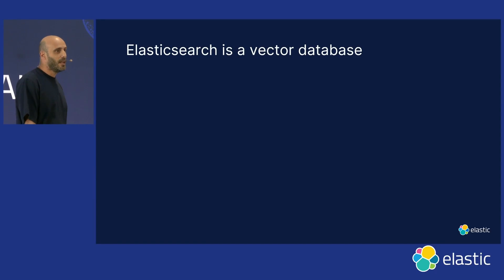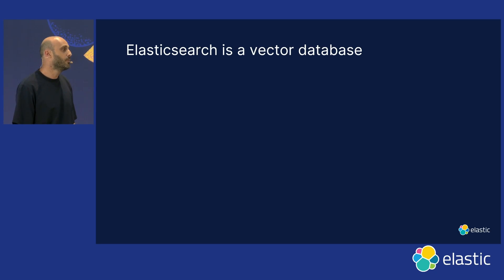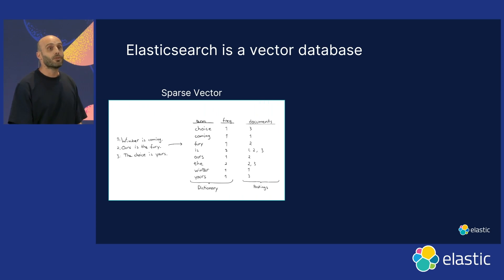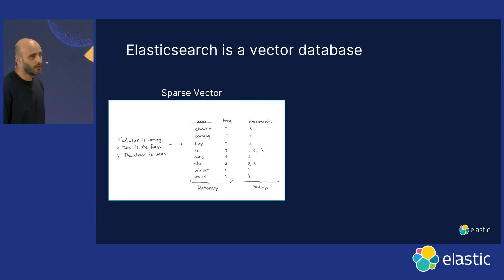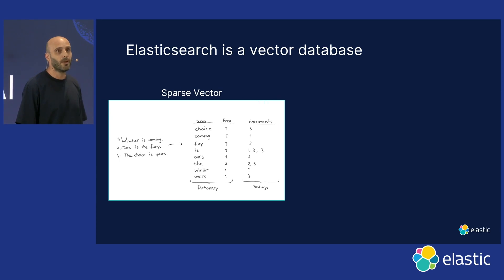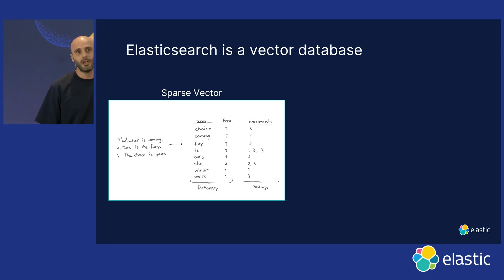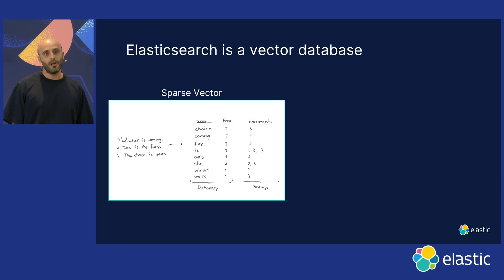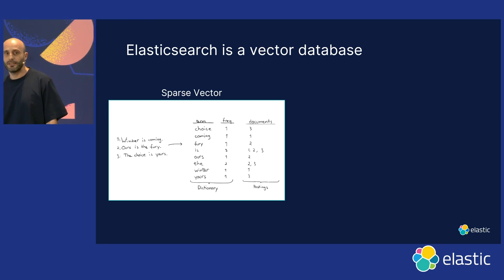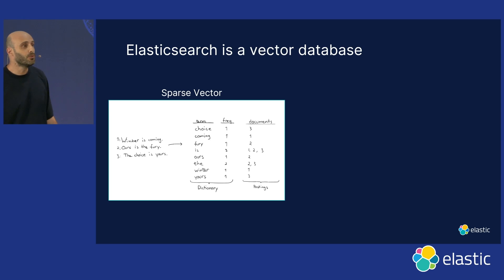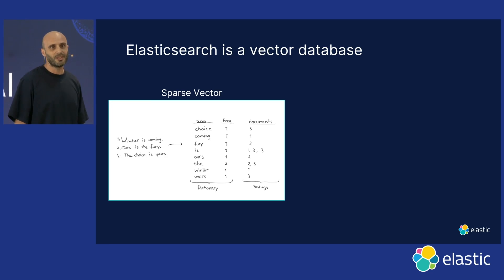Just a little bit of history: Elasticsearch started as a search engine and a data store, primarily used for text search and analytics on semi-structured and unstructured data. That's the data structure we were using until now — we call it sparse vector. With the advancement in machine learning and the increasing need to enhance mixed data types, we introduced what we call dense vector.